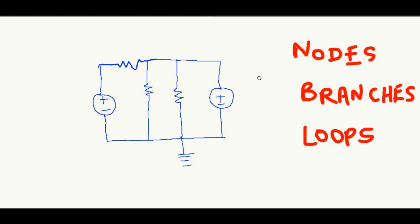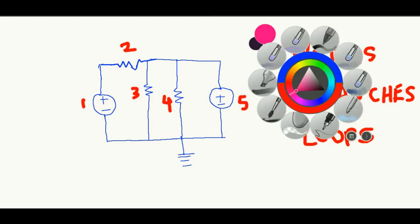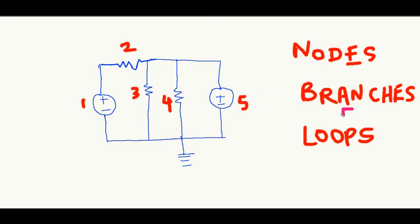How many branches do we have in this circuit? All we need to do is count the number of components or elements in the circuit. This is one, this is two, this is three, this is four, and this is five. So we have a total of five different branches for this circuit.